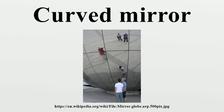When it touches the mirror, as the object moves away, the image diminishes in size and gets gradually closer to the focus, until it is reduced to a point in the focus when the object is at an infinite distance. These features make convex mirrors very useful, since everything appears smaller in the mirror and they cover a wider field of view than a normal plane mirror does.